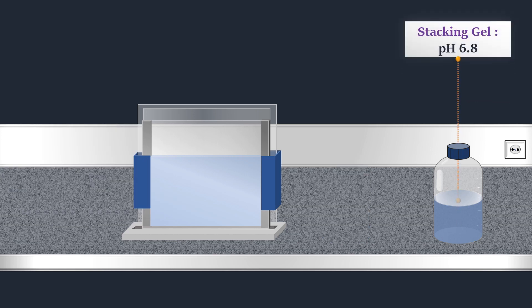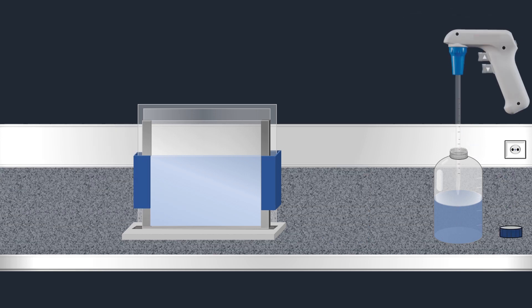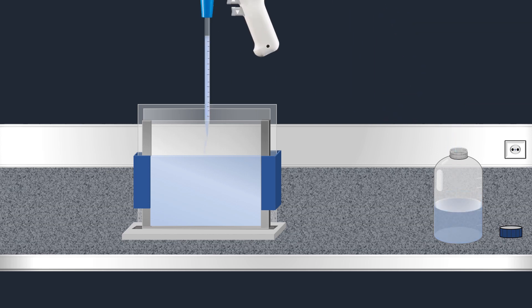The stacking gel solution is poured on top of the solid separating gel. A plastic comb placed on the top of the stacking gel during polymerization enables the formation of small wells in the gel.